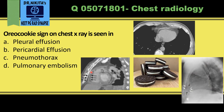On this chest radiograph, the same pattern is visible: the outer black line is pericardial fat, the inner black line is epicardial fat, and the white line in between is the pericardial effusion. So the Oreo cookie sign is seen in pericardial effusion.